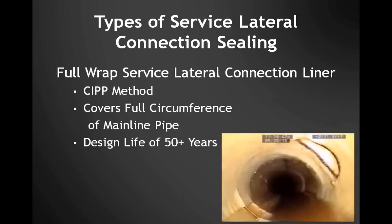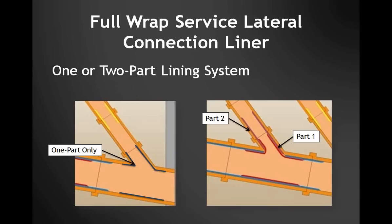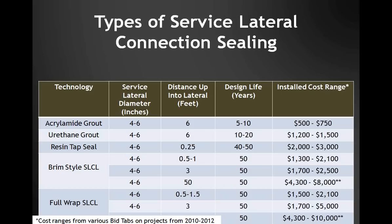The first service lateral connection liner available in the marketplace was a brim seal or top hat, utilizing a circular brim that extends 3 inches around the service lateral, with a design life similar to CIPP or cured-in-place mainline liner — 50 or more years. It was available in a one-part or two-part system: the one-part system goes up to the first joint about six inches up into the lateral, while the two-part system has part one installed first and then part two overlaps and extends up further at varying distances. The second type was a full wrap service lateral connection liner — also a CIPP method — going around the full circumference of the mainline pipe extending four to six inches on either side of the service lateral connection.